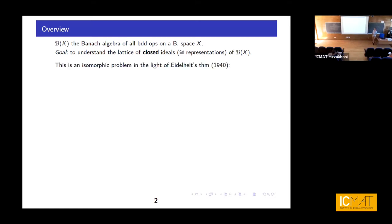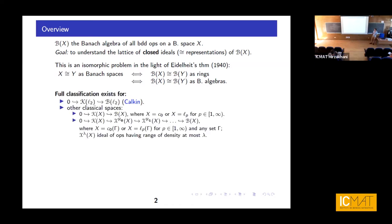This is actually an isomorphic rather than isometric problem, because Eidelheit classically proved that two Banach spaces are isomorphic if and only if the algebras of bounded operators are isomorphic as rings. The full classification exists for a rather narrow class of spaces. The first result is attributed to Calkin from the 1940s, who did it for an infinite-dimensional separable Hilbert space.